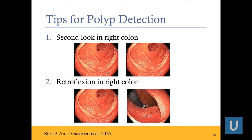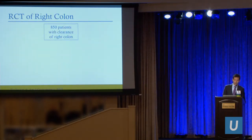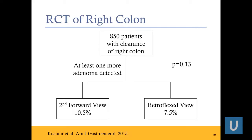A second look in the right colon — either forward view or retroflexion. A study of 850 patients who had clearance of the right colon randomized to either a second forward view or a retroflex view of the right colon found that a second forward view detected an extra polyp 10.5% of the time, and retroflexion detected one 7.5% of the time — not statistically significant, meaning they're roughly equivalent. But 7.5% to 10% of the time you're finding an additional polyp in the right colon. That's a significant percentage.